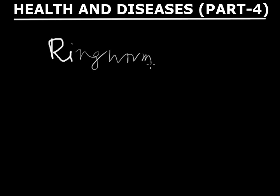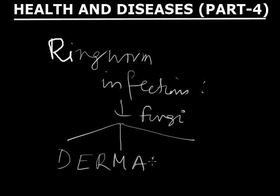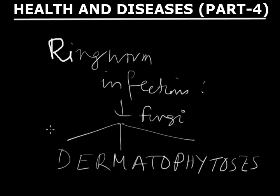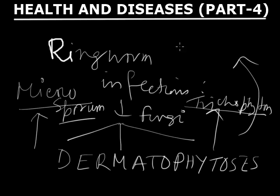Some of the diseases include ringworm infection. Commonly, these ringworm infections are caused by fungi. These fungal groups of populations include a common term, dermatophytosis. Within the category of dermatophytosis, several species are included, such as Microsporum, Trichophyton, and Epidermophyton.